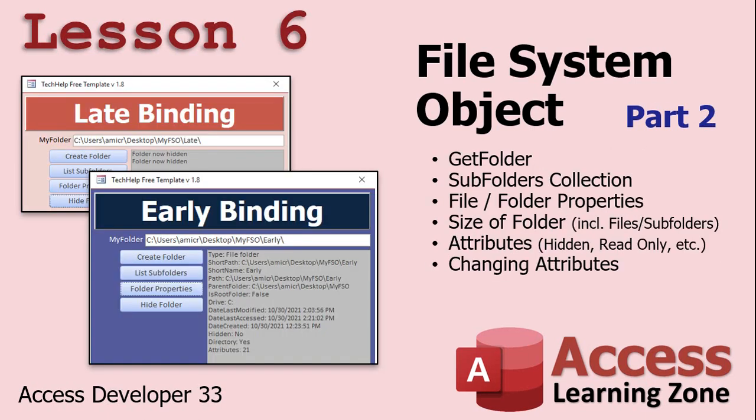In lesson six, we're continuing with the File System Object. We'll learn about the GetFolder command, where we can get an object reference to a folder, then access all of its properties and collections, such as its Subfolders collection — getting a list of all the subfolders under a folder. We'll learn about file and folder properties like date created, date last accessed, and the size of the folder, where you can get a byte size of all the files and folders — that's very handy. Then we'll learn about attributes like hidden, system, read-only, and how to change those attributes.